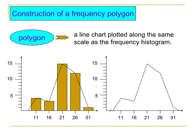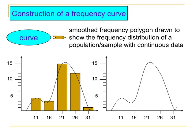A polygon is a line chart plotted along the same scale as the frequency histogram. Observing the graph, the polygon is simply the connected lines of the points in the histogram. A frequency curve is a smooth frequency polygon drawn to show the frequency distribution of a population or sample with continuous data. Instead of straight lines as in a polygon, a smooth curved line is used. A frequency curve can only be constructed when you have continuous data.